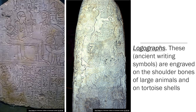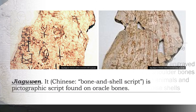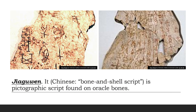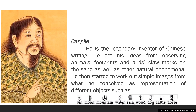Logographs: These ancient writing symbols are engraved on the shoulder bones of large animals and on tortoise shells. In Chinese, this is called bone and shell script. It is a pictograph script found on oracle bones. He is the legendary inventor of Chinese writing. He got his ideas from observing animals' footprints, birds' claws, and marks on the sand as well as other natural phenomena. He then started to work out simple images representing different objects such as sun, moon, mountain, water, rain, wood, dog, cattle, and horse.